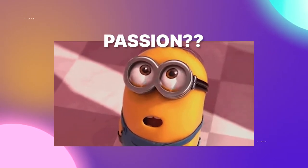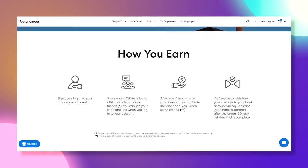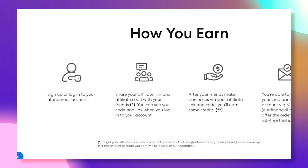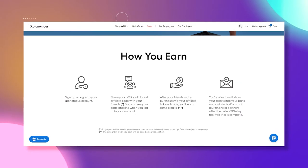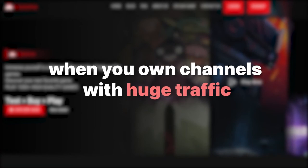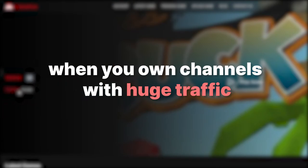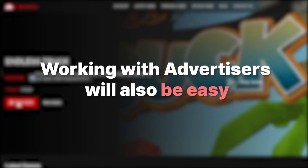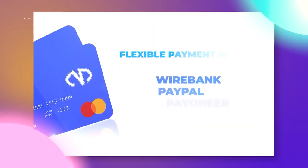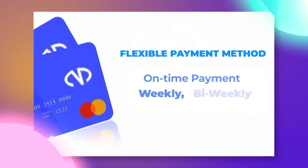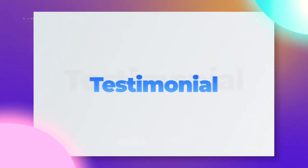Still with us? Good — the action stage is here. In general, to be an affiliate you have to sign up for an affiliate campaign. You can cooperate directly with advertisers, especially when you own channels with huge traffic, which makes working with advertisers a little easier. Otherwise, if you want more assurance of payment in full and on time, as well as some extra benefits, then working with networks is a great choice.